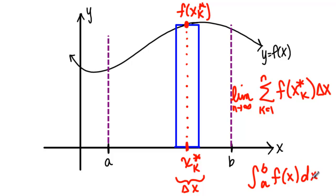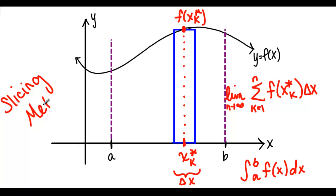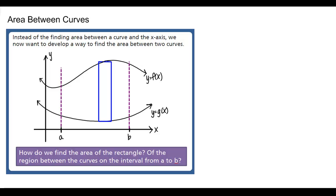That method of taking a region and slicing it up into rectangles, finding the area of each rectangle, and then summing them and turning it into an integral — we're going to call that the slicing method. In this course, we're going to be applying the slicing method to a lot of new things other than just area under a curve. The first thing we're going to look at is area between curves.